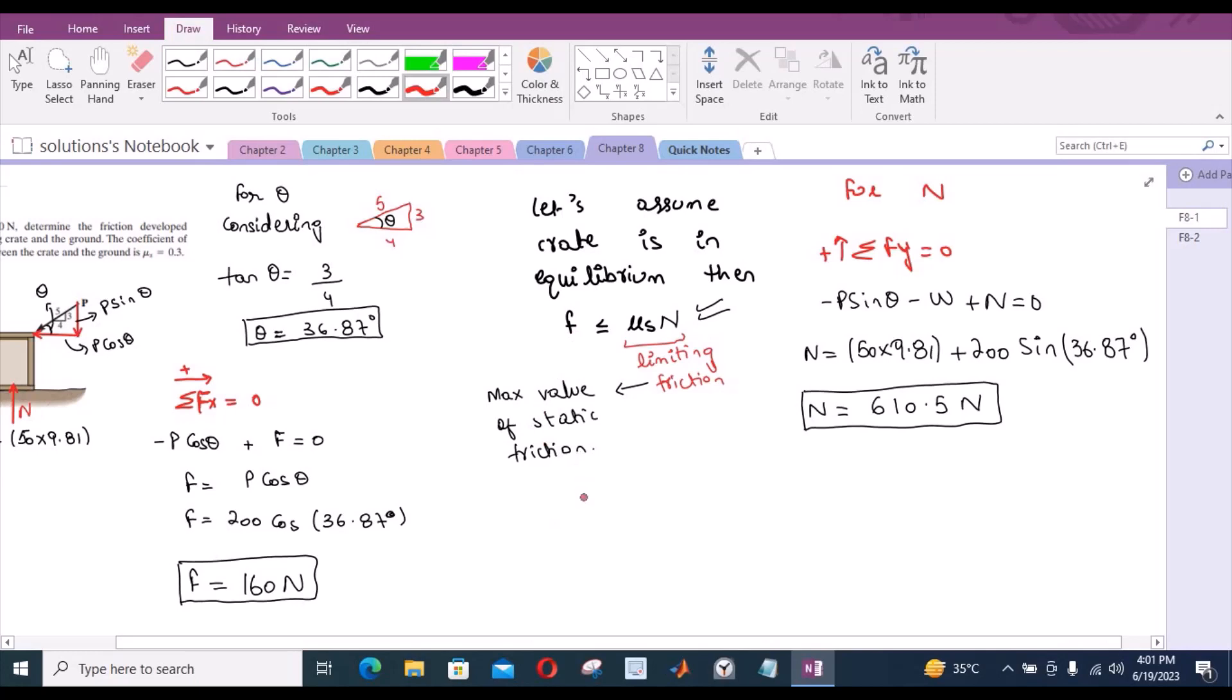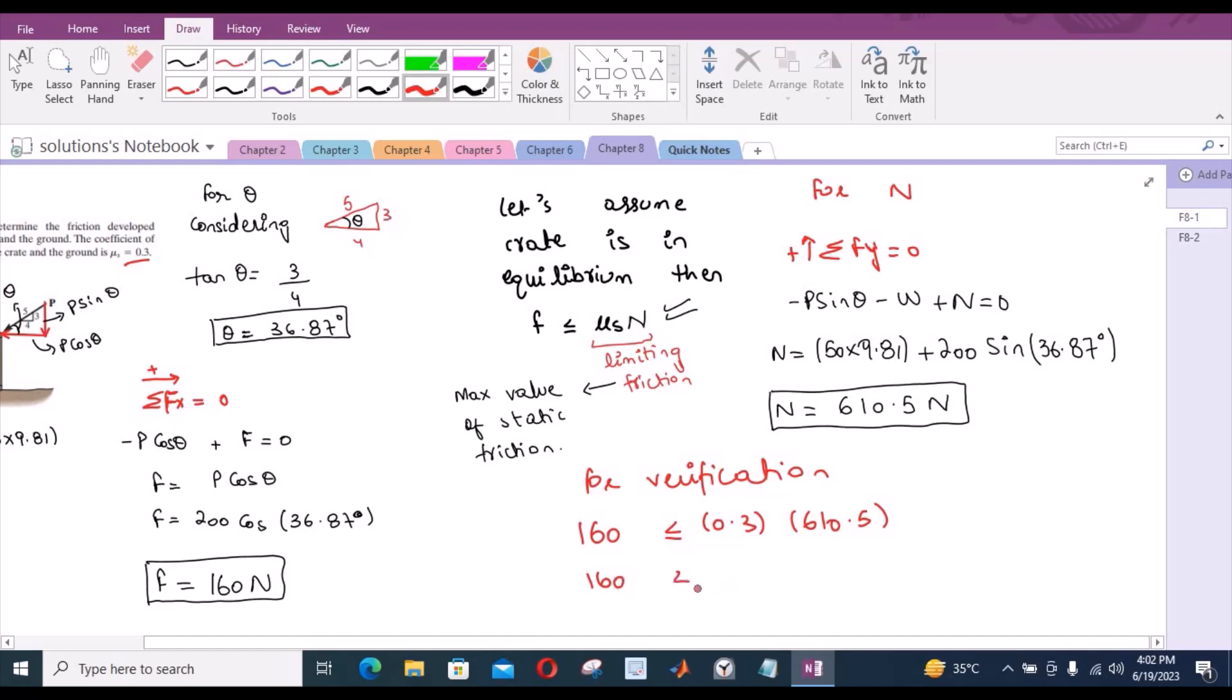Let's verify this condition. For verification: F is 160, mu_s is 0.3, and N is 610.5. From here, 160 is less than 183.15 N. So our assumed condition is valid. Our assumption is valid that the crate is in equilibrium.